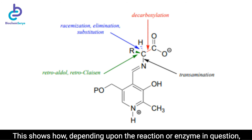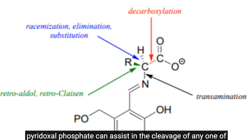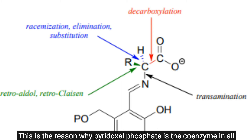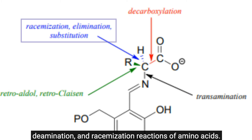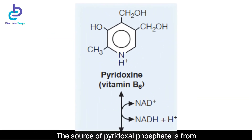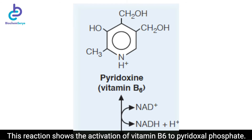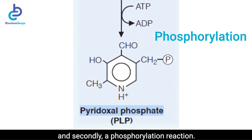The versatility of PLP in terms of its ability to assist with a wide variety of reaction types is illustrated here. Depending upon the reaction or enzyme in question, pyridoxal phosphate can assist in the cleavage of any one of the four bonds to the alpha-carbon of the amino acid substrate. This is the reason why pyridoxal phosphate is the coenzyme in all transamination reactions, and likewise in certain decarboxylation, deamination, and racemization reactions of amino acids. The source of pyridoxal phosphate is from vitamin B6, also known as pyridoxine. This reaction shows the activation of vitamin B6 to pyridoxal phosphate — the two steps are first an oxidation reaction, and secondly a phosphorylation reaction.